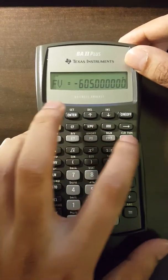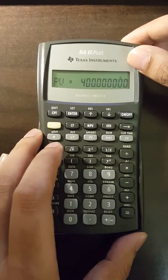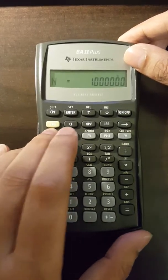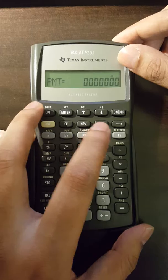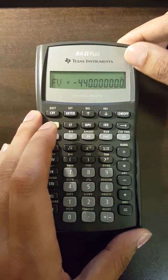We will clear the TVM registers again. For CF3, present value is 400. I by Y is 10. N is 1. And PMT is 0. We'll compute the future value. We get $440, which will be positive.